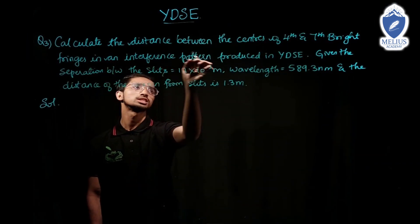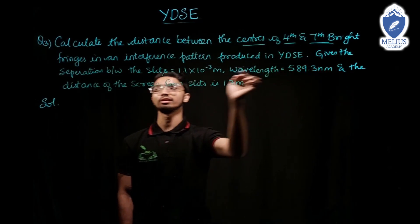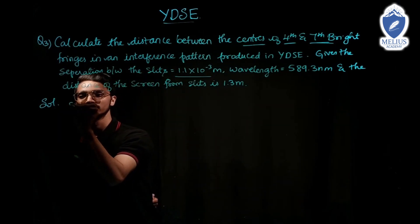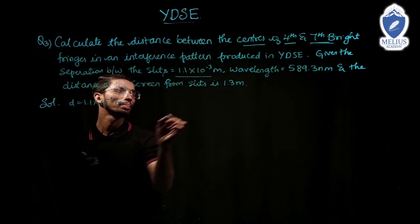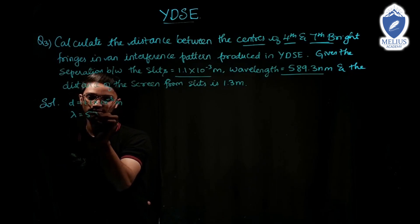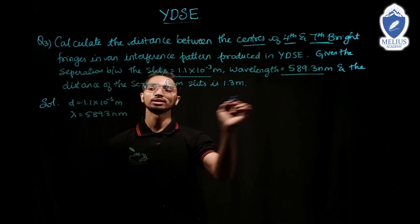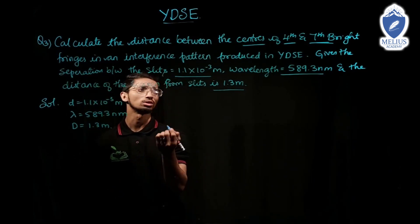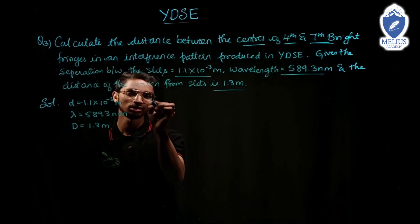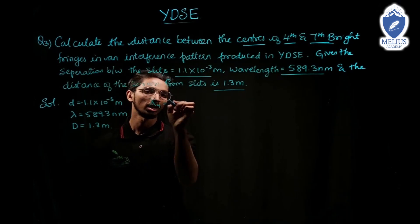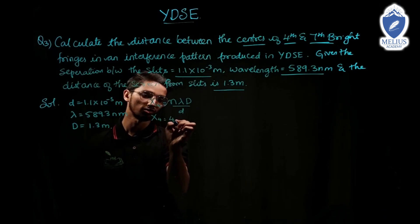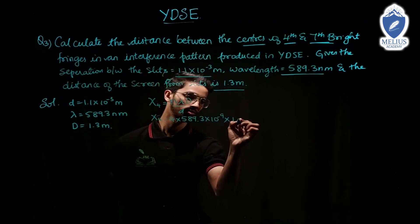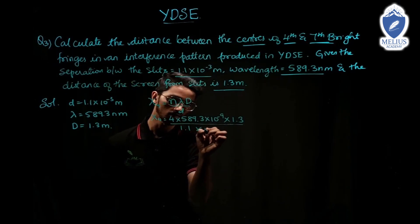Next question: calculate the distance between the centers of the 4th and 7th bright fringes in an interference pattern produced in YDSE, given separation between slits d = 1.1 into 10⁻³ meter, wavelength = 589.3 nanometer, and distance of screen from slits D = 1.3 meter. The formula for position of nth bright fringe is: xn equals n times lambda times D divided by small d.